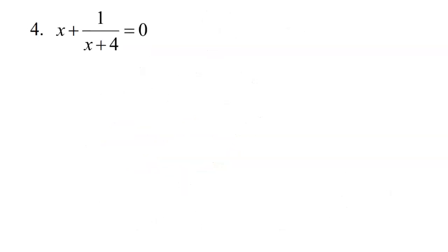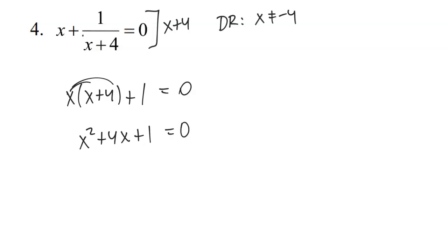All right, one more example here for your notes, just so that you can feel totally comfortable. In this particular case, I see only one denominator. It looks totally factored, so I'm good to just write my domain restrictions. x is not equal to negative 4. And then I'm going to multiply by x plus 4 to the entire equation. Okay, so x times x plus 4. Nothing's going to cancel out there since there's no denominator on that term. Plus 1 over x plus 4 times x plus 4 is going to just leave me with 1. And then 0 times anything is just 0. All right, I'm going to distribute my x. That's going to give me x squared plus 4x plus 1 is equal to 0. And so now I'm ready to start solving this quadratic.